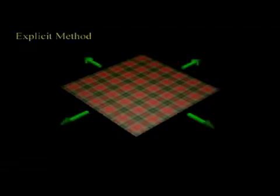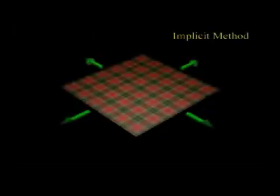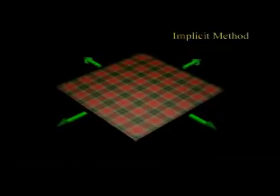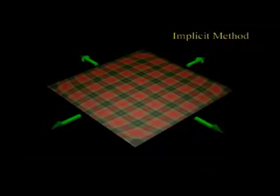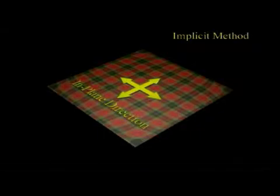To simulate cloth, we have to integrate a stiff set of ordinary differential equations. An explicit method fails to stably integrate a stiff ODE with a large time step, and therefore implicit methods are often used to avoid numerical instability. This numerical instability is related to the in-plane motion of cloth particles because cloth strongly resists in-plane stretching.